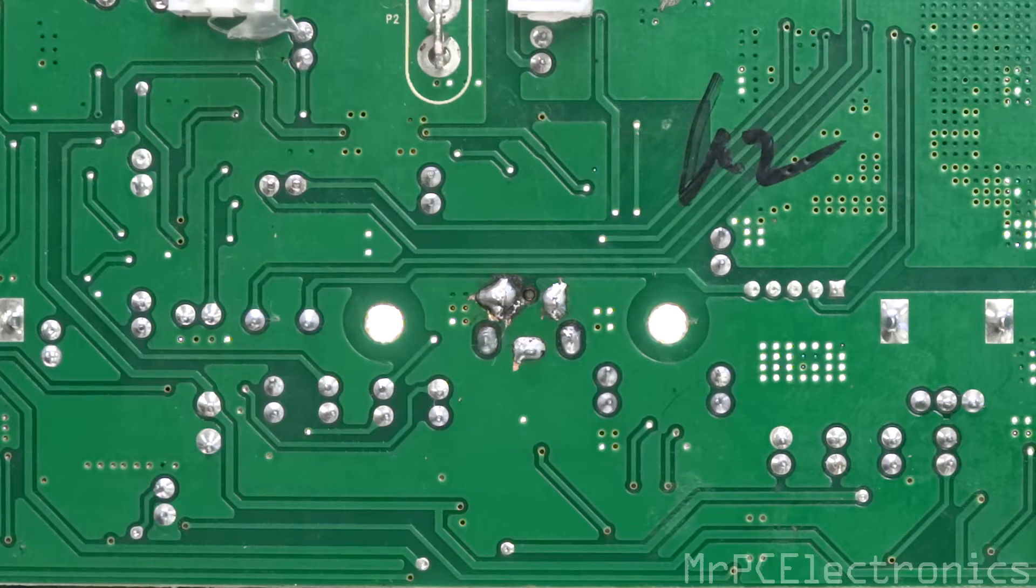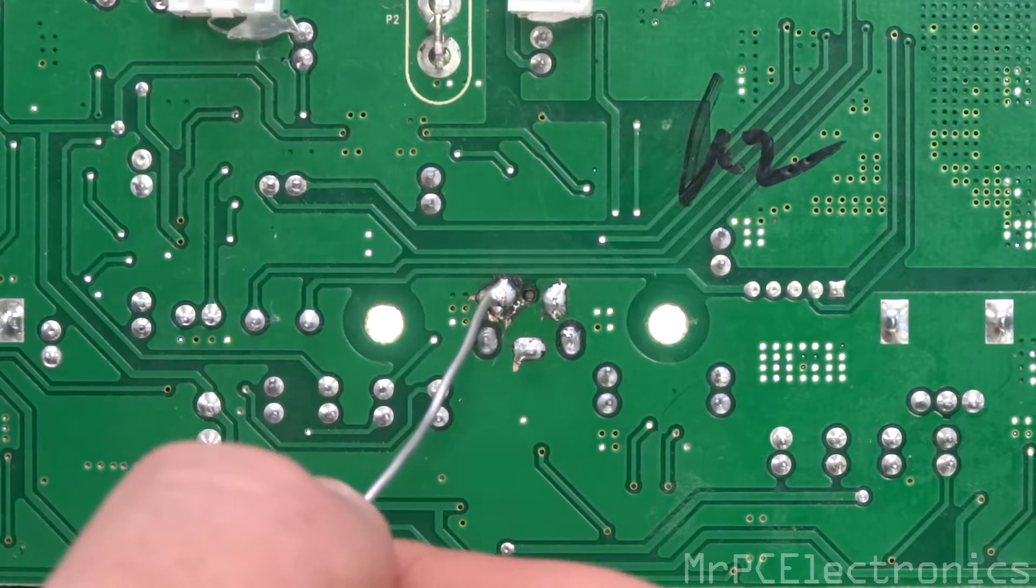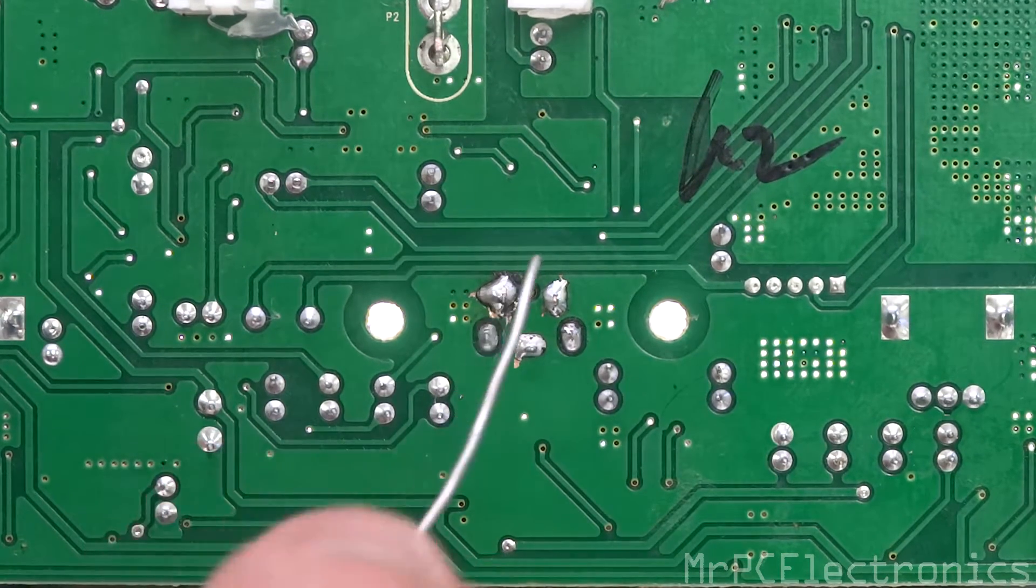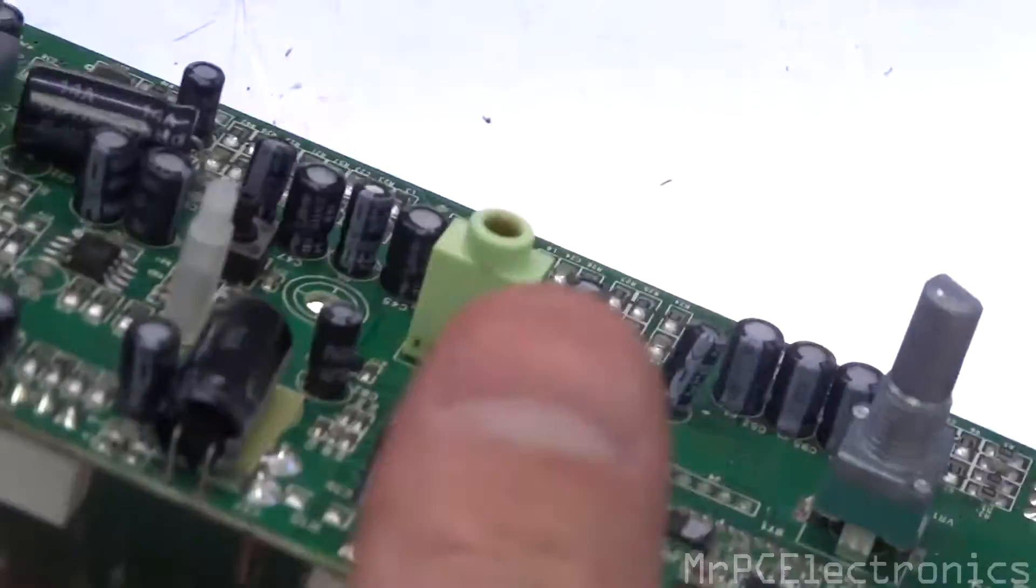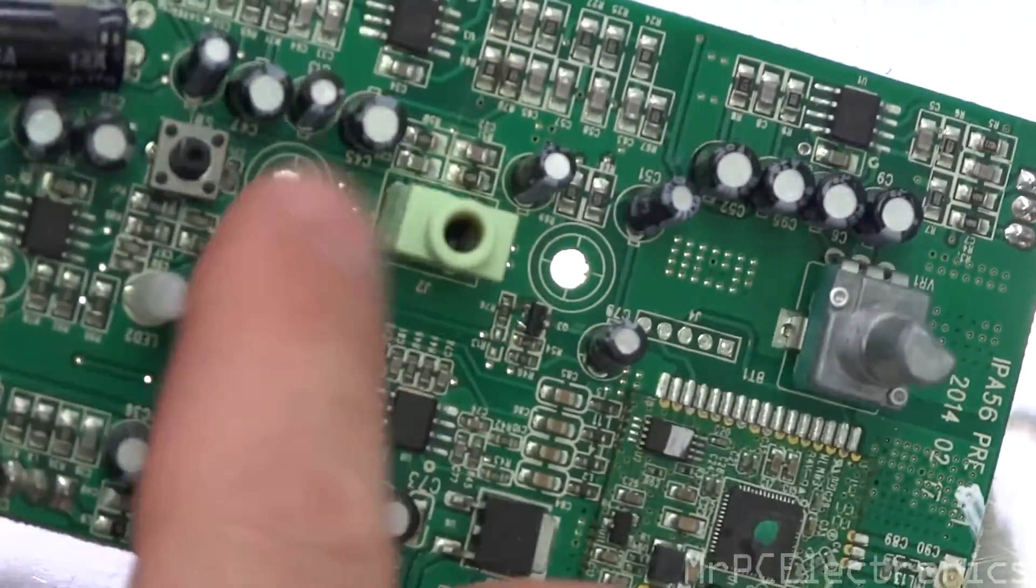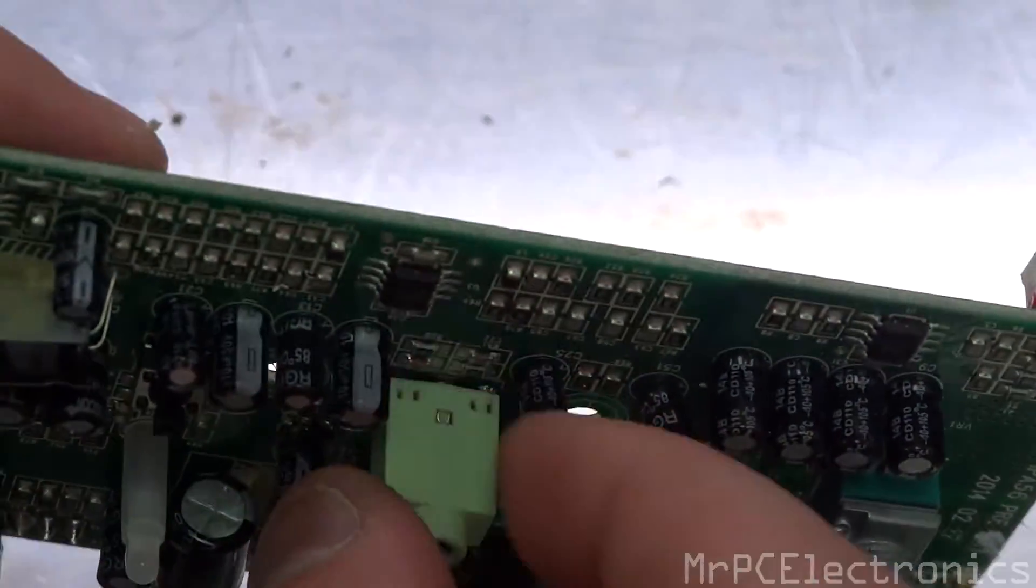My soldering gun kind of lost its heat right here on this one, so I had to redo it twice, extract it and re-solder it. That's pretty much it. When we flip it over, you can see it's on there really nice. We got it flush.